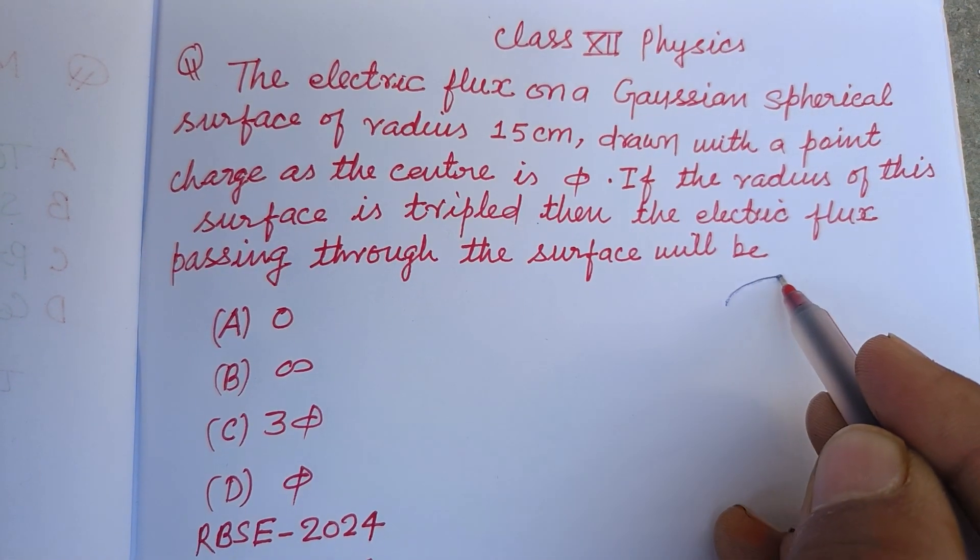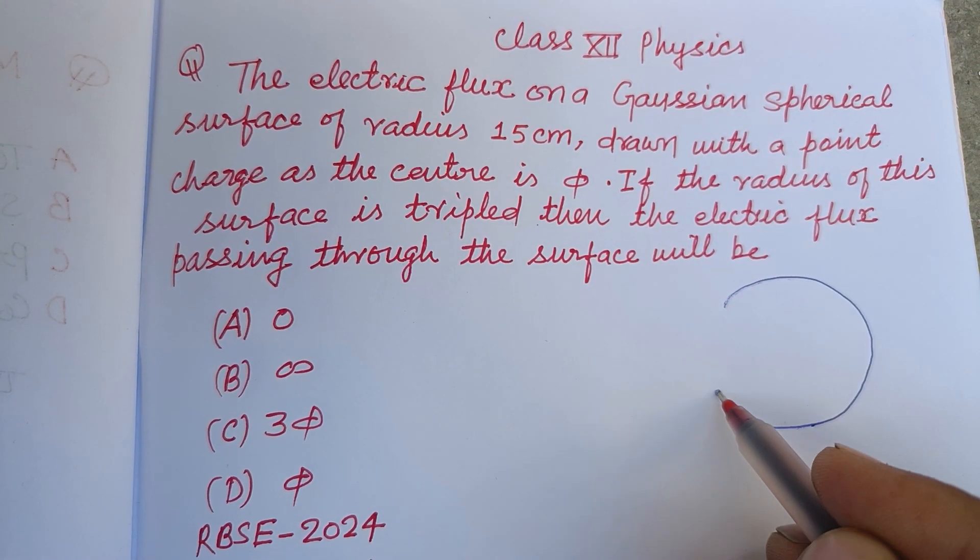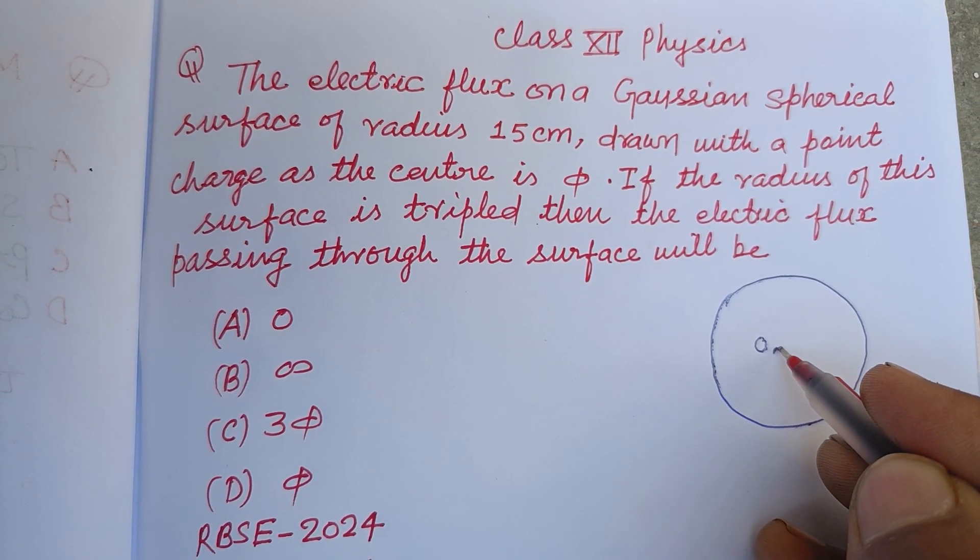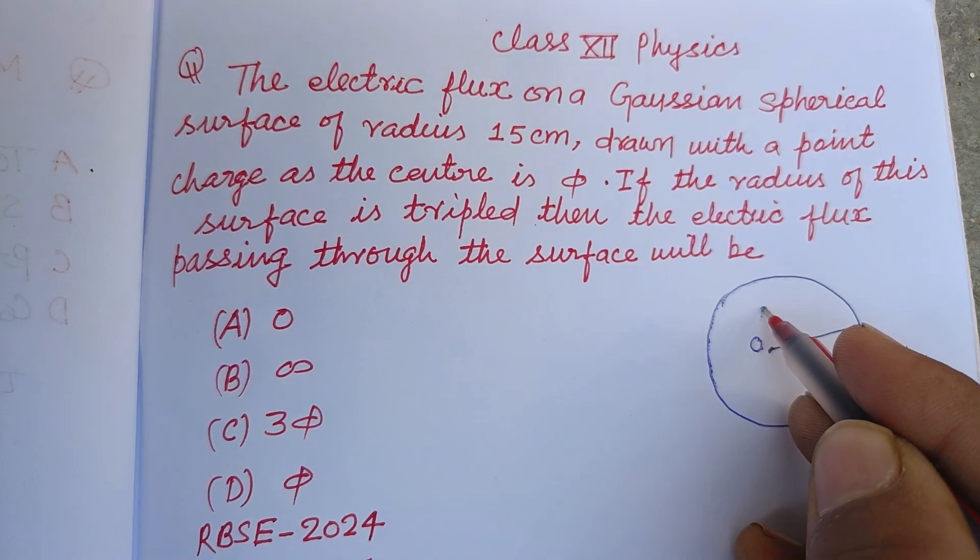So this is a spherical surface and this is the center of this sphere. Here is a charge Q, and its radius is R.